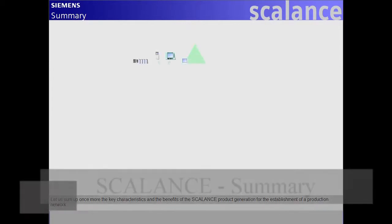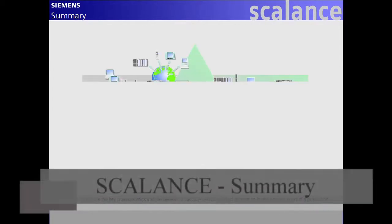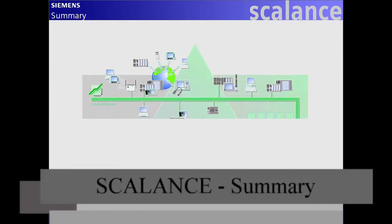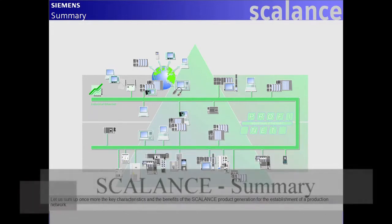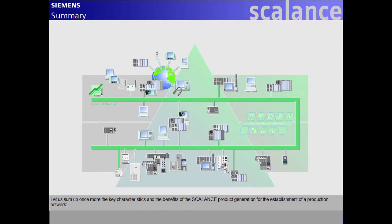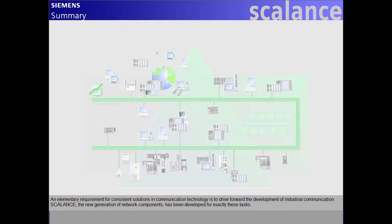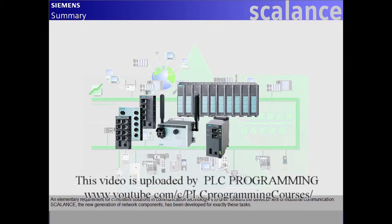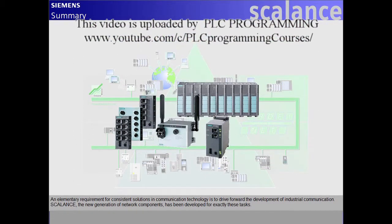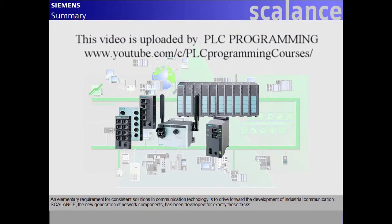Let us sum up once more the key characteristics and the benefits of the Scalant's product generation for the establishment of a production network. An elementary requirement for consistent solutions in communication technology is to drive forward the development of industrial communication. Scalant's, the new generation of network components, has been developed for exactly these tasks.